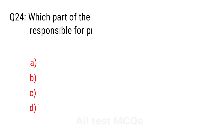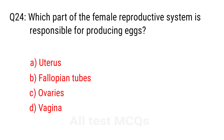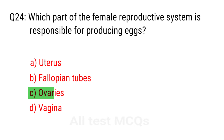Q24. Which part of the female reproductive system is responsible for producing eggs? The right answer is option C: Ovaries.